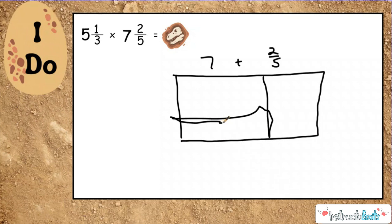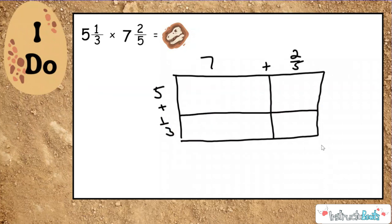So it doesn't matter what factor you put on top. So we're going to split the whole number and the fraction up. And then we're going to put 5 plus 1/3 over here. So you notice I'm just splitting the fractions and the whole numbers up. And then we simply just multiply to find the product of these smaller arrays. So 5 times 7 is 35, 5 times 2/5, and you might just need to multiply it over here on the side. Here we got 10/5, which we know is really just 2.